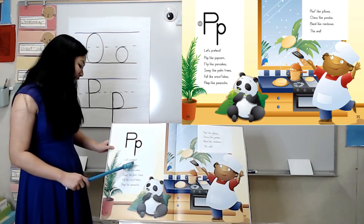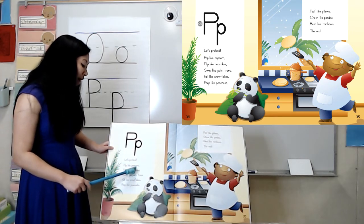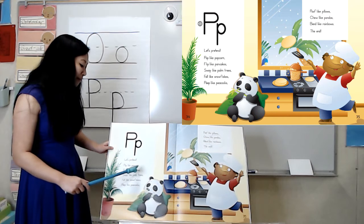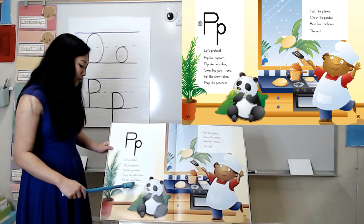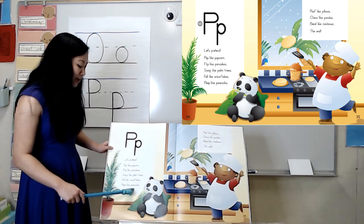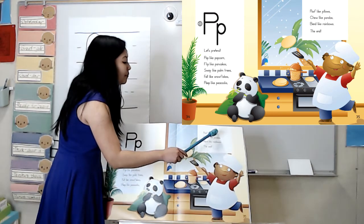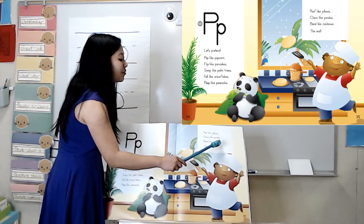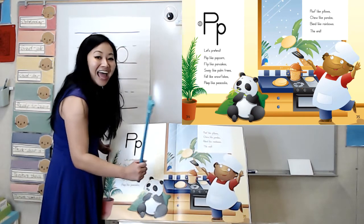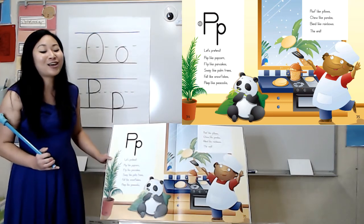Let's pretend. Pop like popcorn. Flip like pancakes. Sway like palm trees. Fall like snowflakes. Peep like peacocks. Poof like pillows. Chew like pandas. Bend like rainbows. The end. That was such a fun poem.